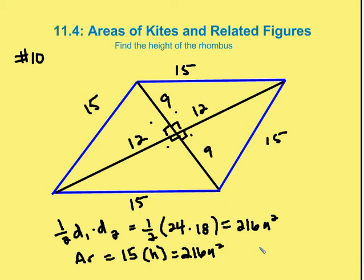So I know now that the height is equal to 216 over 15. I can divide both the numerator and denominator by 3, and I get 72 over 5. And that is my answer.